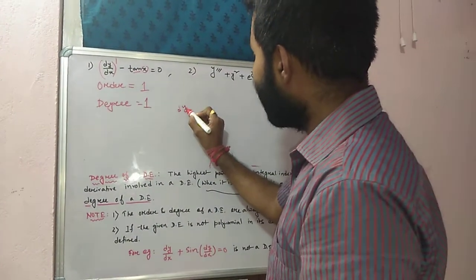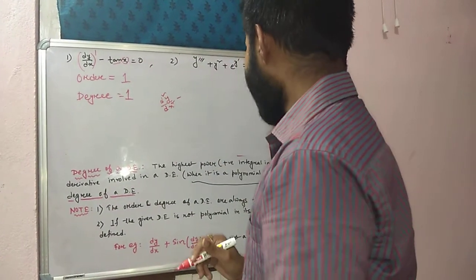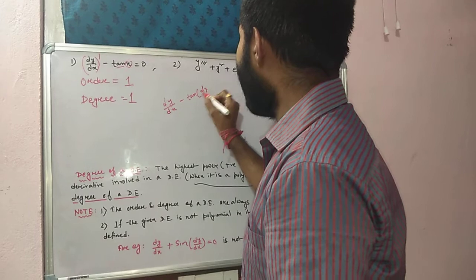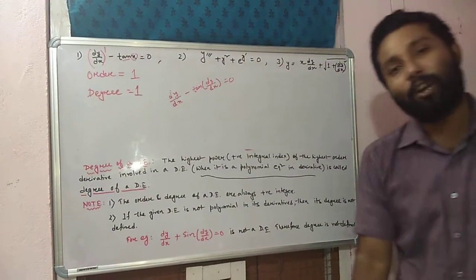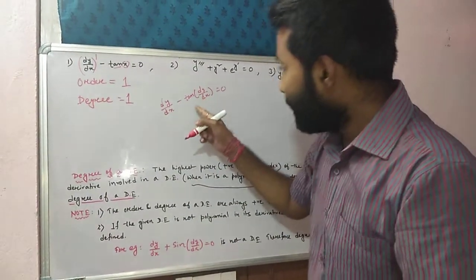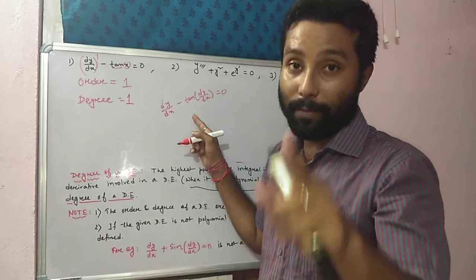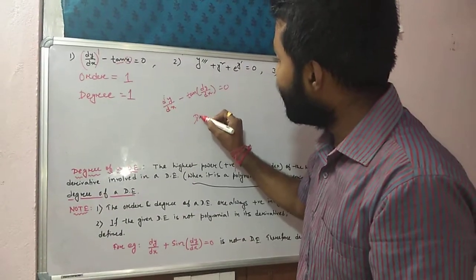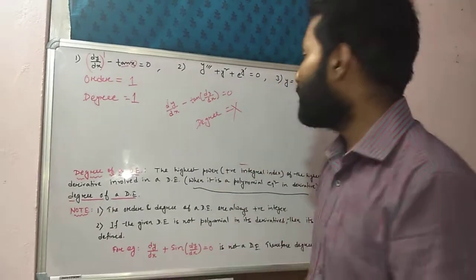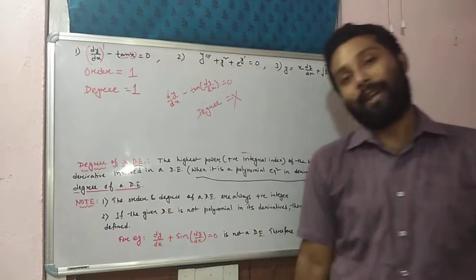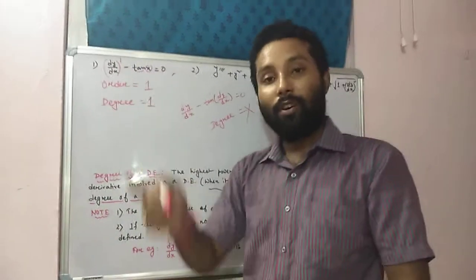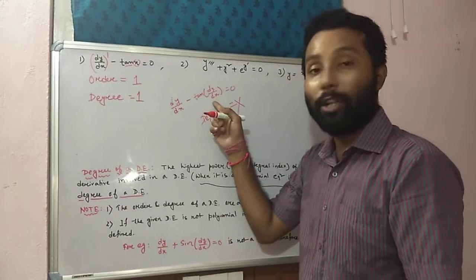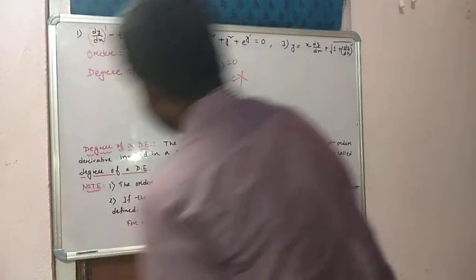Ye question ko thora sa modify karke: d²y/dx² - dy/dx + tan(dy/dx) = 0. What is the degree of this differential equation? This differential equation is not polynomial in its derivative because the angle of this trigonometric term is dy/dx, which is not a standard angle. So that's why in this case, degree is undefined. Yeha pe 10x tha — matlab standard angle diya tha, toh degree find out kar sakte hain. Yeha pe standard angle nahi hai, isliye degree undefined hai, because this is not a polynomial in its derivative.